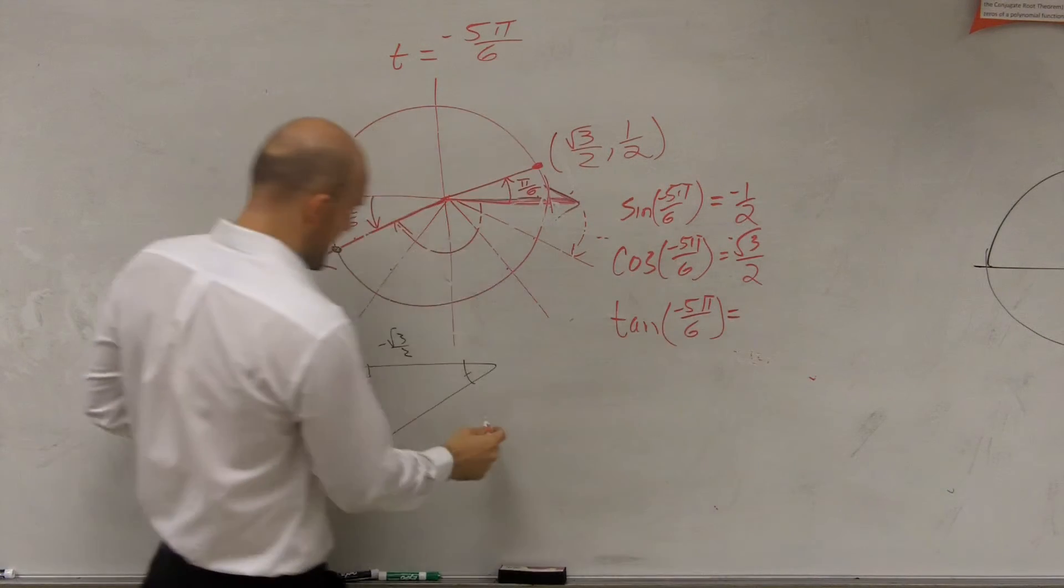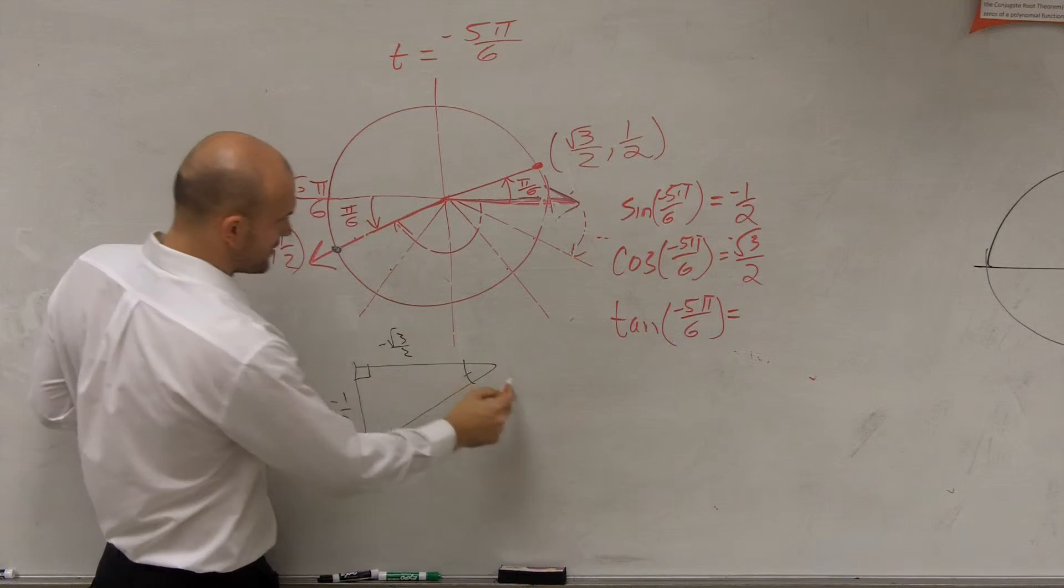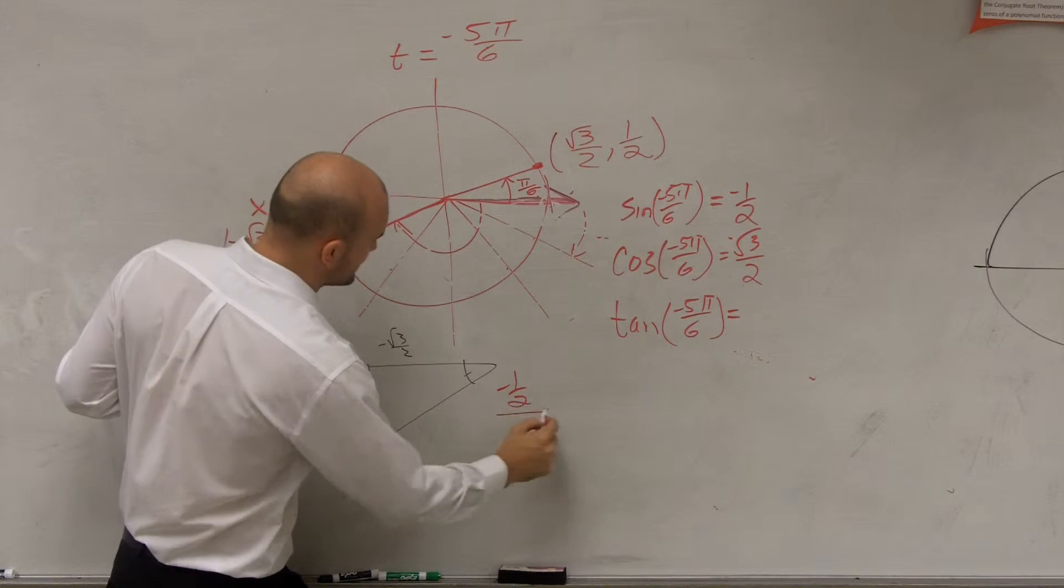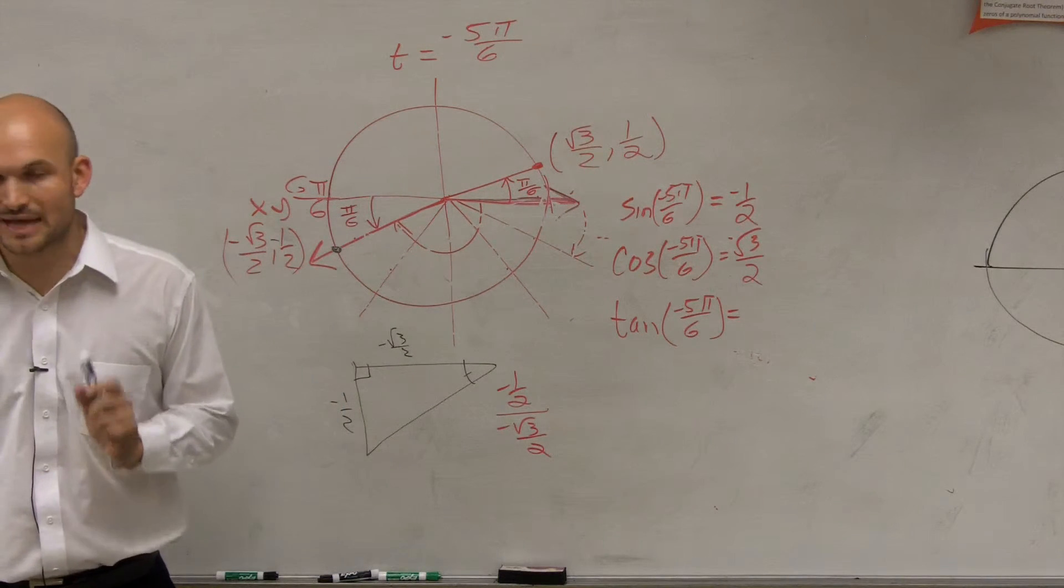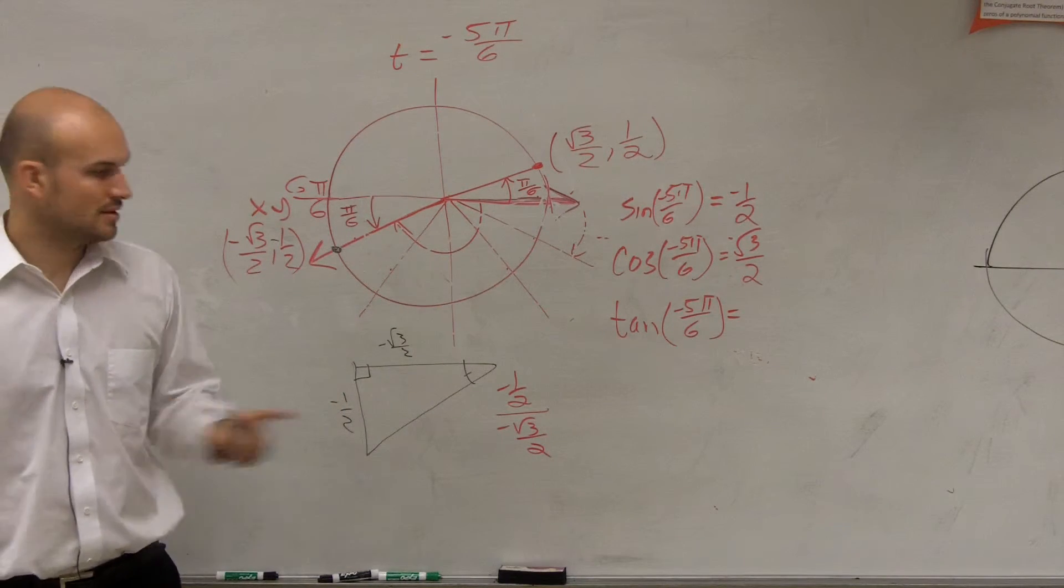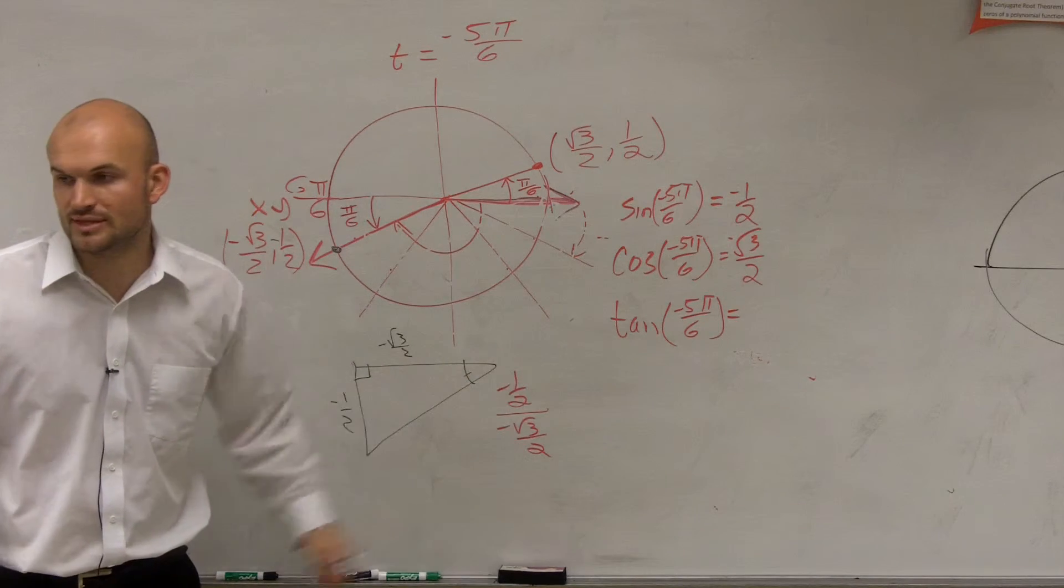So therefore, that means I have opposite over adjacent, negative 1 half divided by negative square root of 3 over 2. Pay attention, ladies and gentlemen, because a lot of you are going to get stuck here. So now I'm dividing by 2 on the top and bottom.